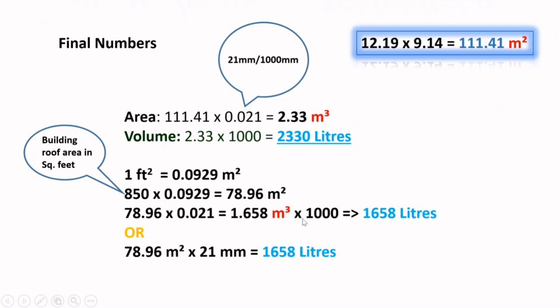Or what we can do is, instead of going for multiple multiplication or division, we know the area 78.96 and directly multiply with the millimeter of the rainfall, so we will get the exact value. Let's cross verify whatever the liters we are calculating here.